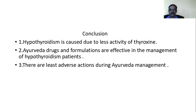In conclusion, hypothyroidism is caused due to less activity of thyroxine — T3 (triiodothyronine) and T4 (thyroxine). Ayurvedic drugs and formulations are effective in the management of hypothyroidism patients, with least adverse reactions when given in the correct dosage. Regarding diet, we can use pulses, green leafy vegetables, and high fiber-containing foodstuffs. Avoid curried and fried things, and food items containing excessive fat should also be avoided.